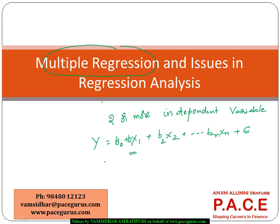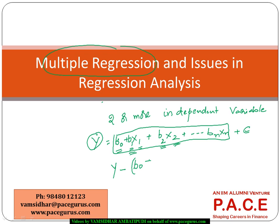Just as in simple regression, the intention of deriving the coefficients b0, b1, b2 for variables x1, x2 is to mitigate the error. The difference between the actual and predicted values, squared, must be minimized. Whatever combination of b0, b1, b2 minimizes this squared error becomes the best-fitting multiple regression model.